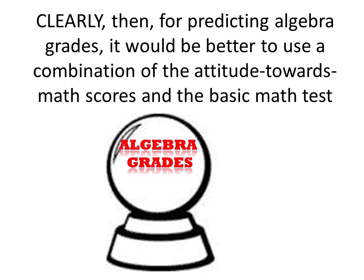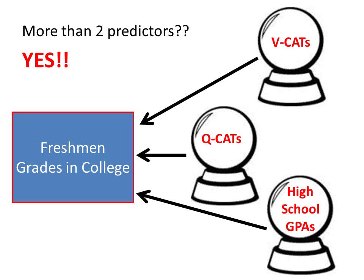For predicting algebra grades, it would be better to use a combination of attitude toward math scores and the basic math test. Multiple correlation coefficients can also be calculated for a combination of more than two predictors. For instance, it's common to determine the validity of college admission procedures by calculating the multiple correlation coefficient for a combination of at least three predictors — such as verbal college admissions test scores, quantitative college admissions test scores, and high school grades — using freshman college grades as the variable being predicted.